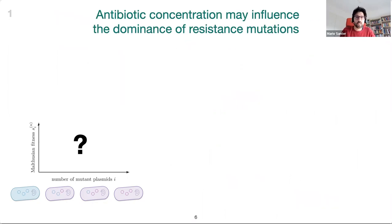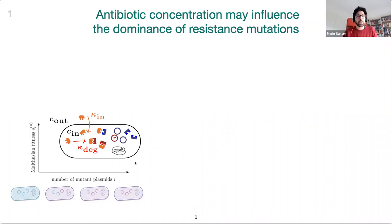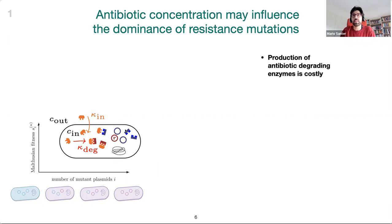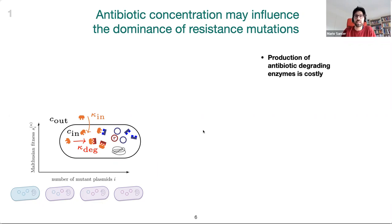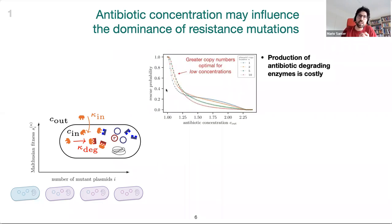A follow-up question we asked was: how is the dominance of resistant alleles on a multicopy plasmid actually shaped? We built a small model of antibiotic degradation and looked at two scenarios. In the first scenario, the production of antibiotic-degrading enzymes is costly, modeled by a degradation rate depending on the relative number of mutant compared to wild-type plasmid copies. For this, the rescue probability over antibiotic concentration shows that greater copy numbers are optimal only for low concentrations.